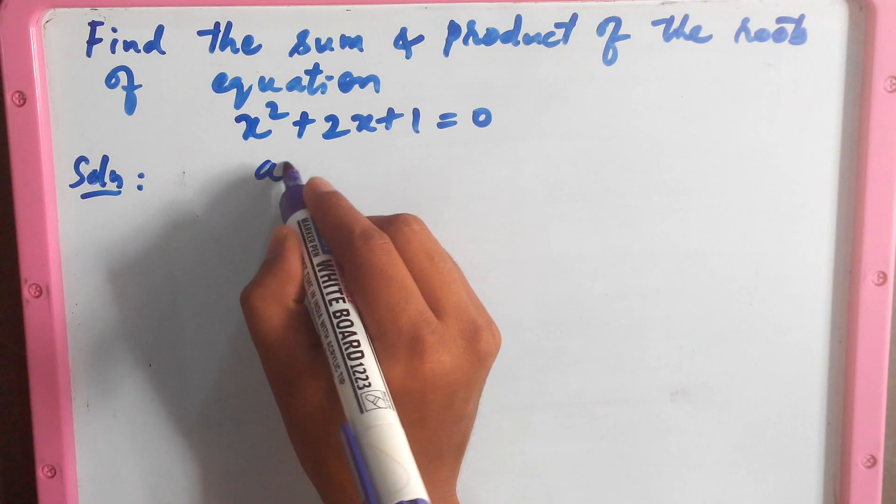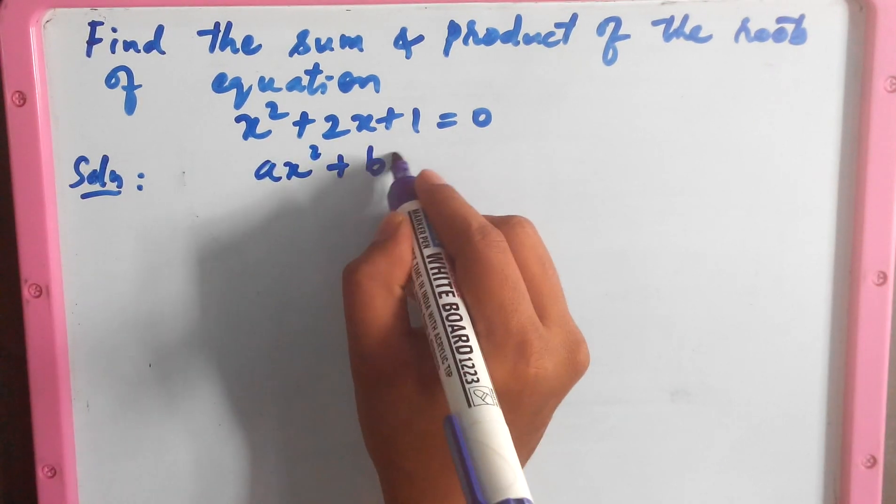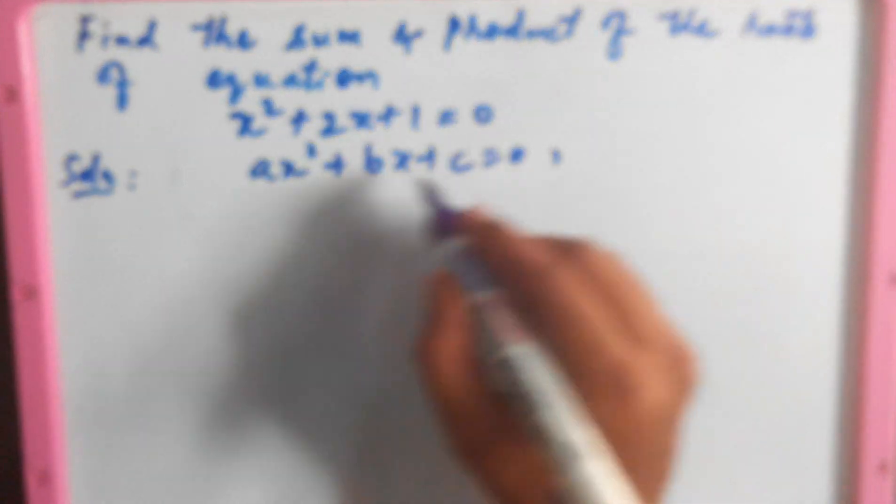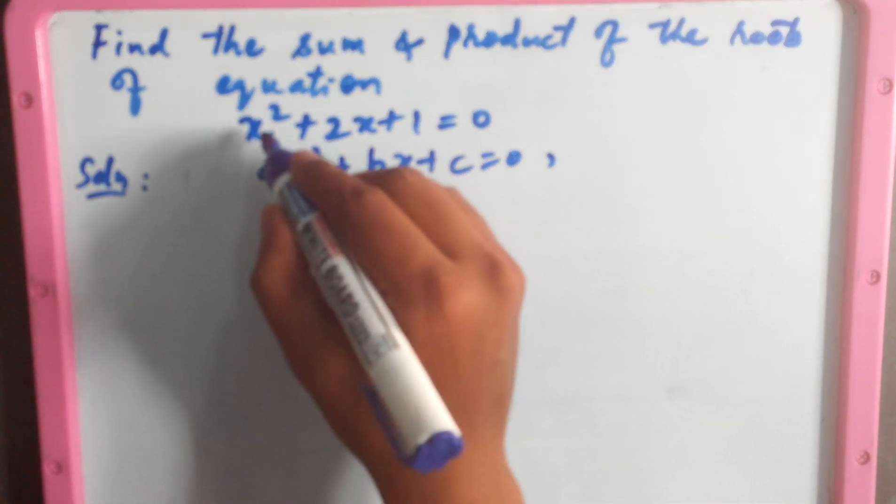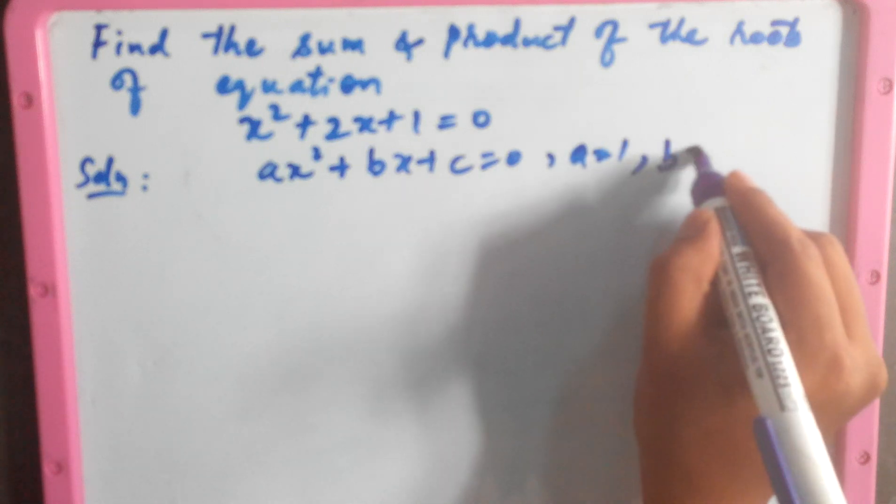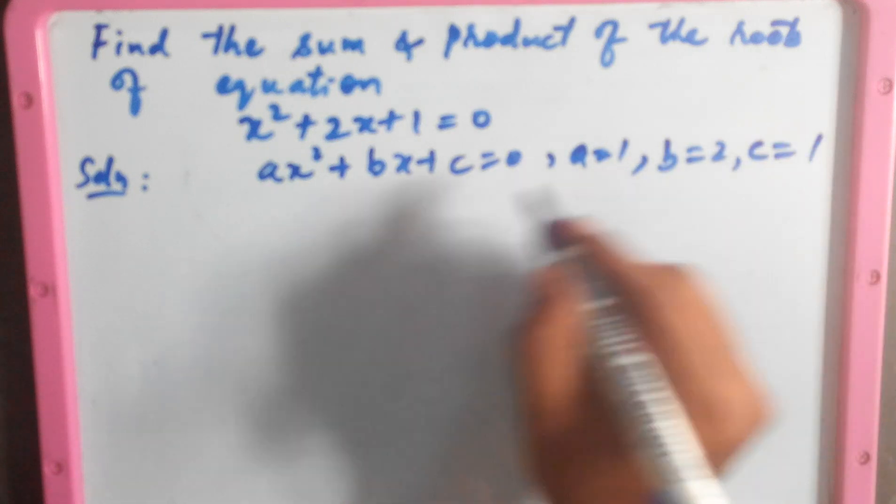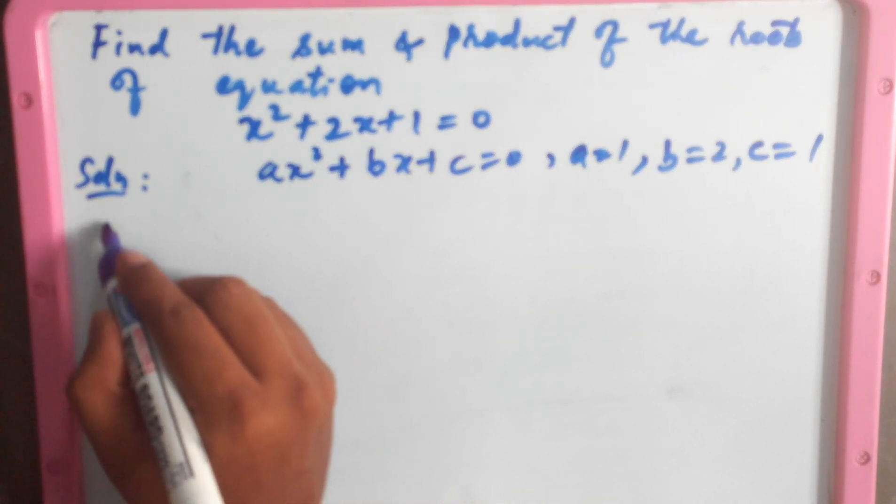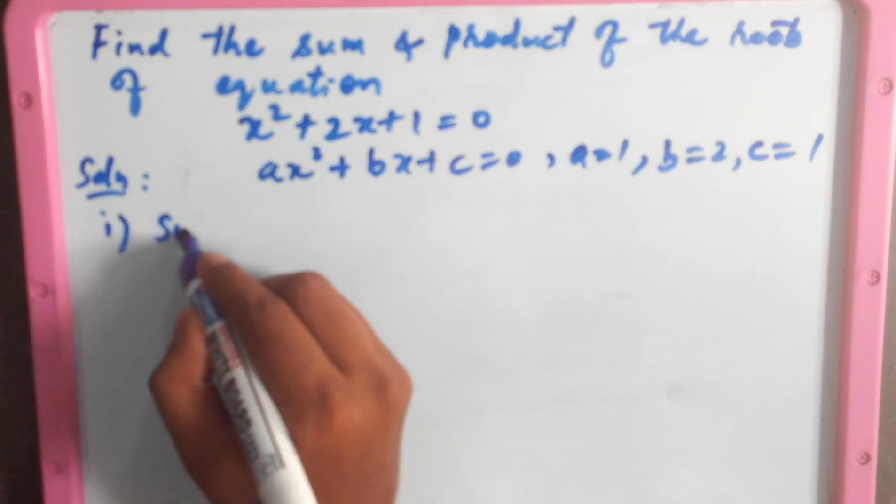This is of the form ax² + bx + c = 0. Comparing the equation to this standard form, we can find that a = 1, b = 2, and c = 1. We have the formula to find the sum of the roots.